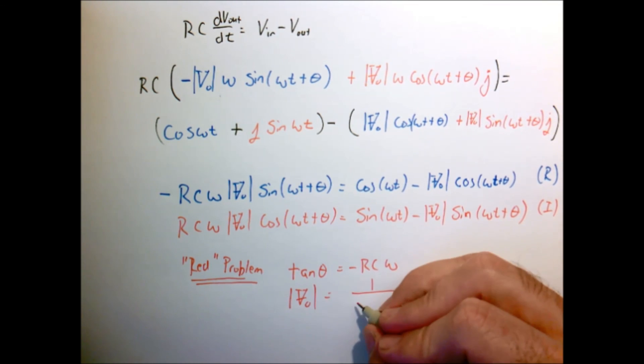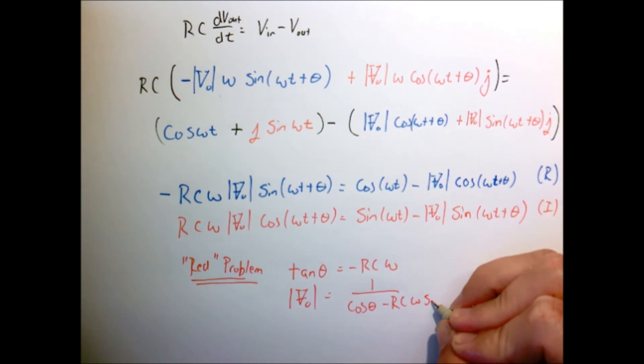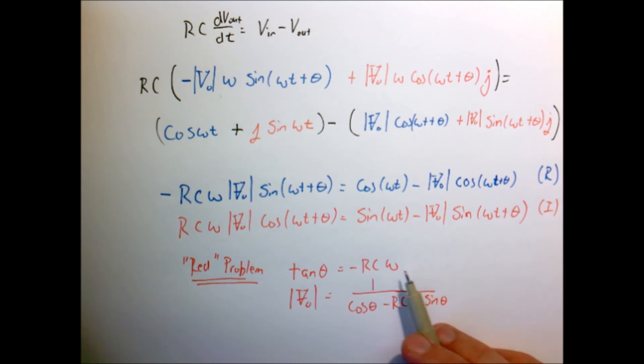And our solution for the magnitude of my complex number V naught turned out to be one over cosine theta. And that was kind of the weird form we derived it in, and then we used our trig identities to make this just in terms of rc and omega. So we solved that red problem doing a whole bunch of trig identities.